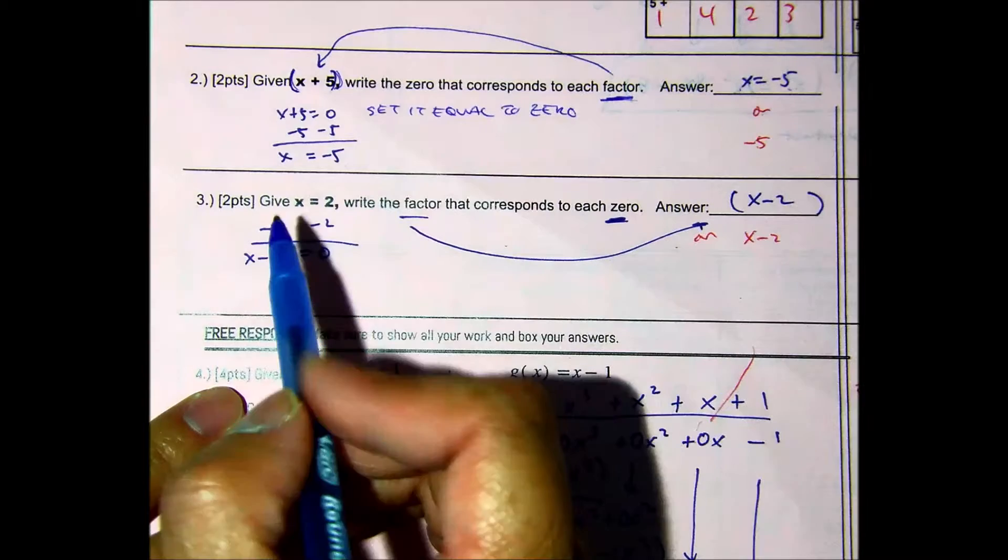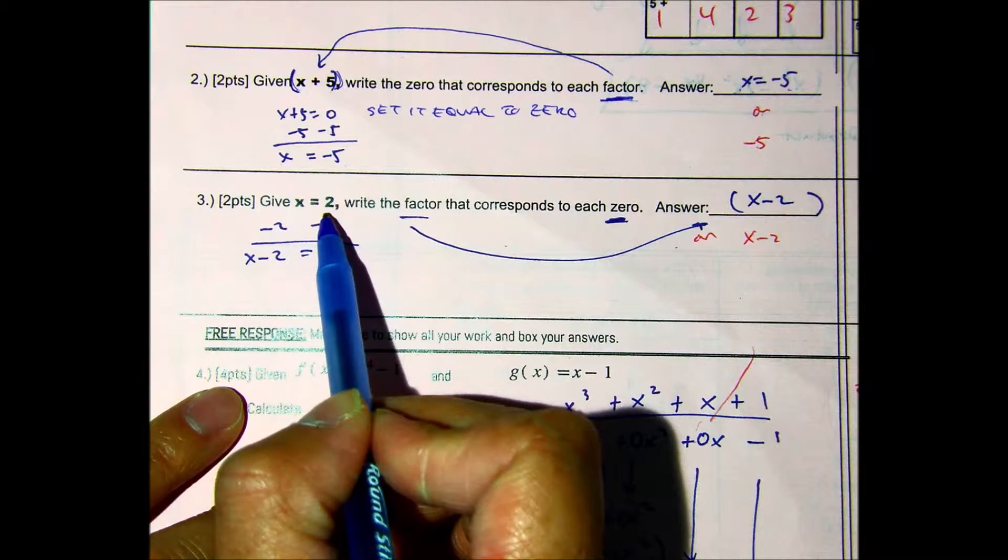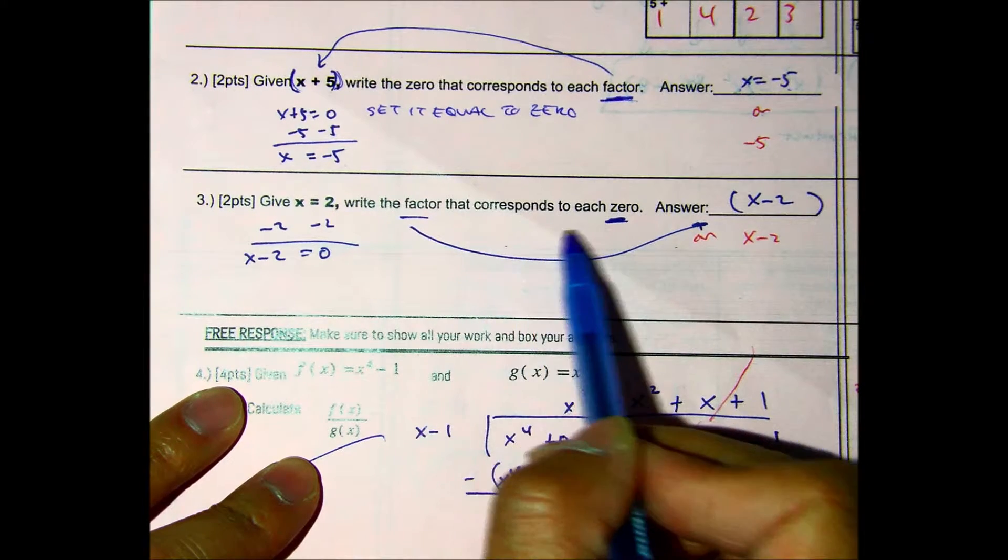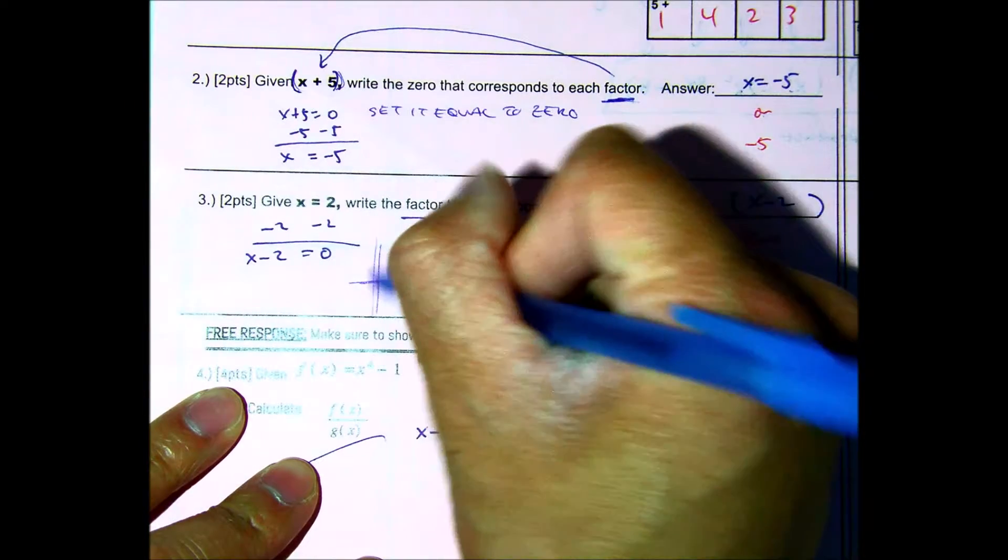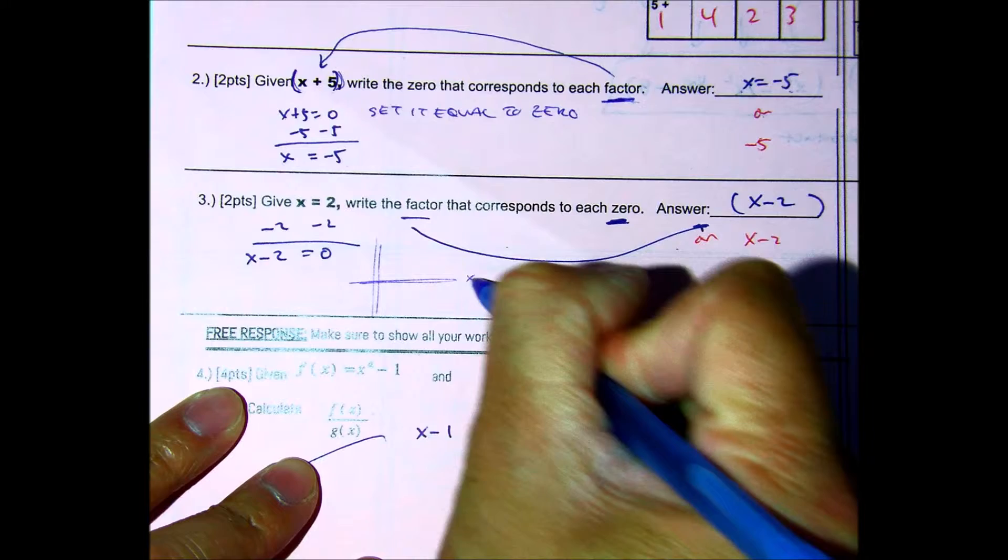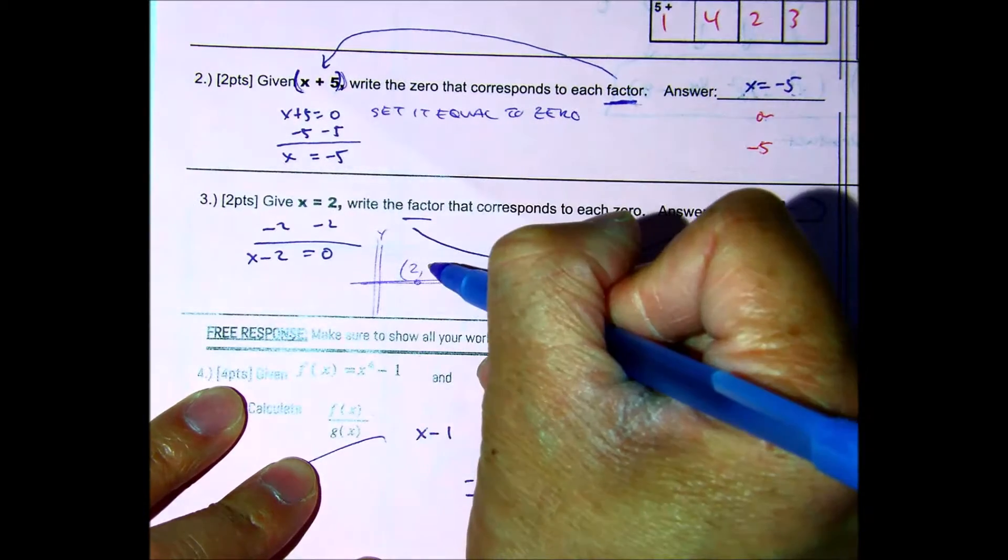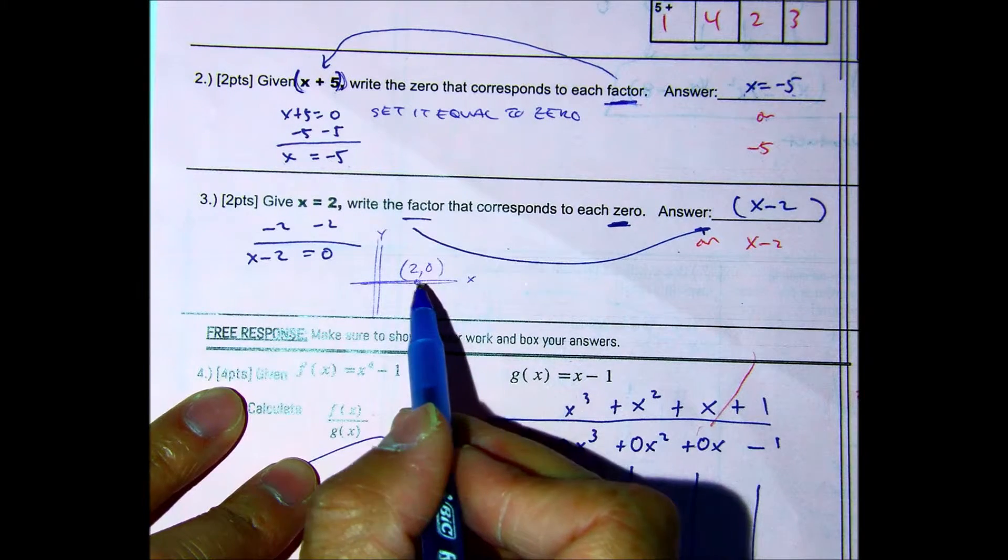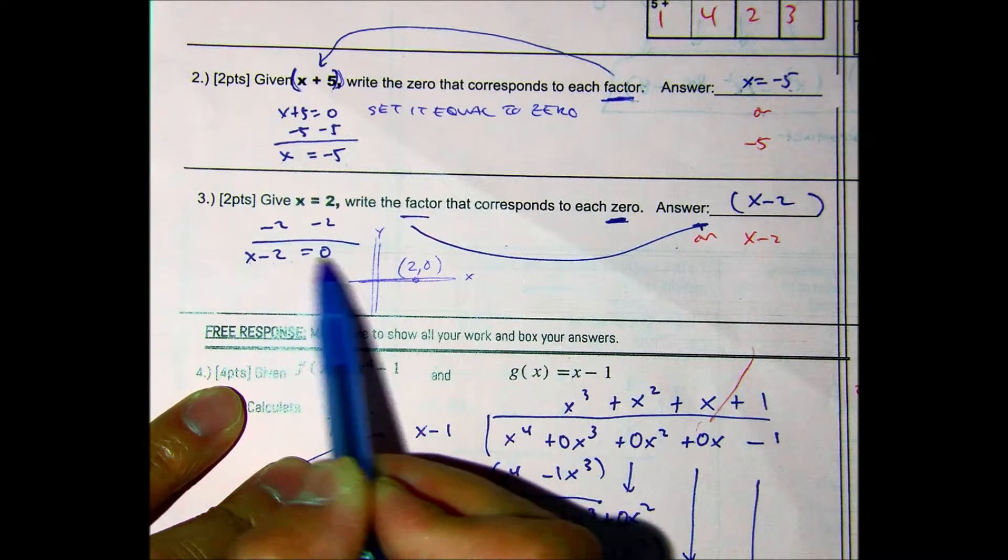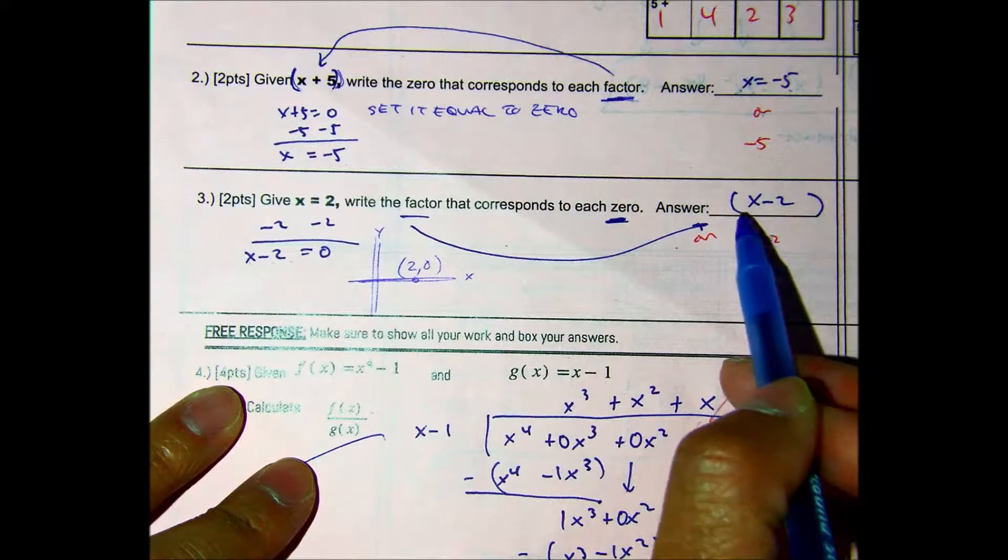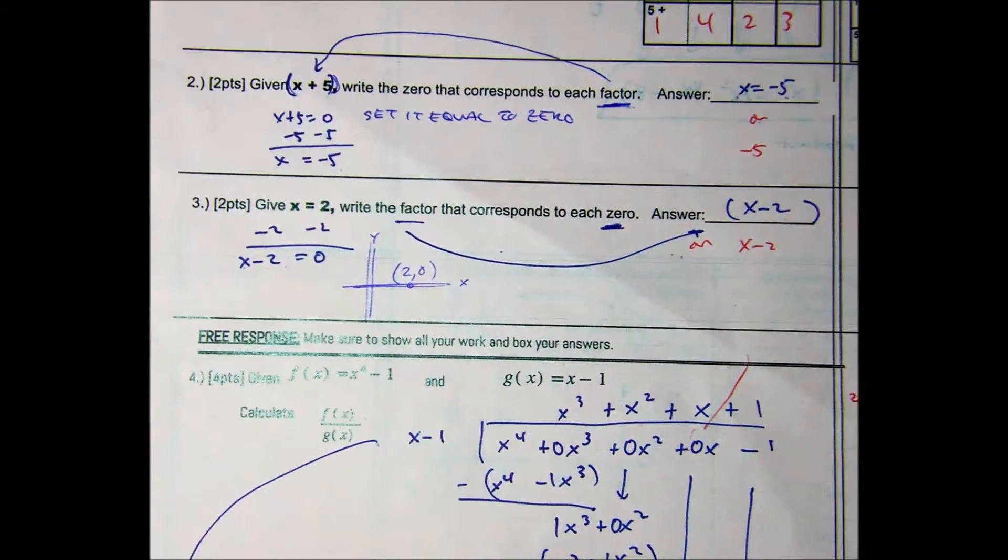Question number 3 is just going opposite. Given, should say, given x equals 2, write the factor that corresponds to each 0. So this is a 0. And again, if you needed a visual, you could have done something like this. On the x-axis, this is 2. Well, if this is 2, that means on the y-axis, it's a 0. This is a visual of that, right? So if I subtract 2 from both sides, I get x minus 2 equals 0. So if you wrote within parentheses x minus 2, or no parentheses x minus 2, then you would have gotten full credit. 2 points or 0.